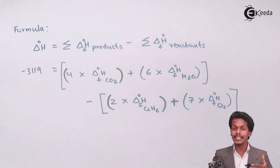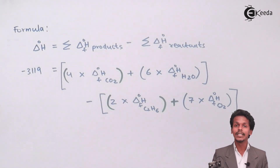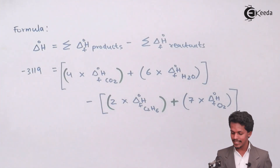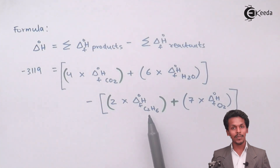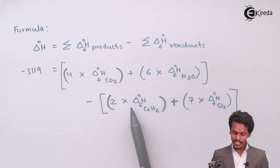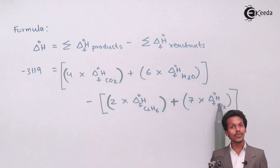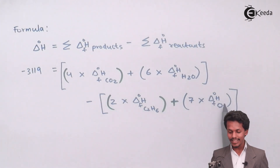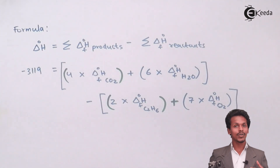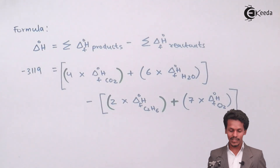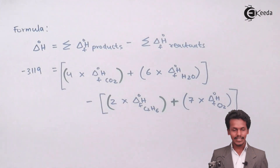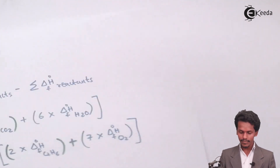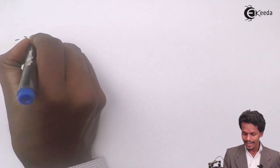Since the heat of formation of oxygen is not given and we need to calculate another value, we take the heat of formation of O2 as zero. This makes it easy to calculate. So we will substitute the values into our formula.